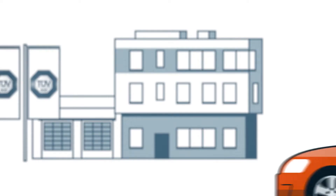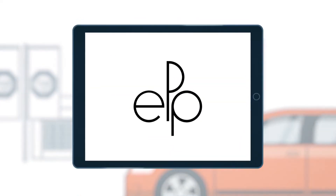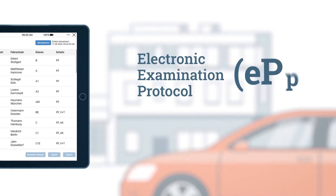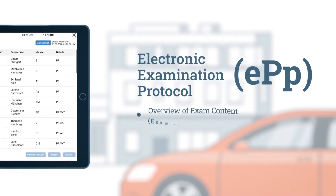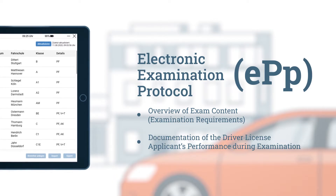The examiner uses an electronic test protocol, EPP. This protocol is a program that illustrates the current test content and thus the requirements for the candidate. The examiner uses it as an overview of the content to be tested, meaning the test requirements, and as a documentation tool.